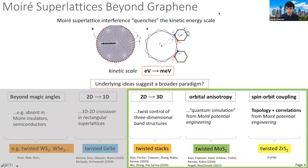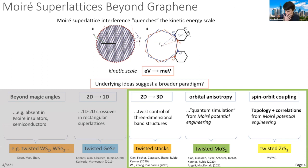I'll give three examples: the 2D-to-3D crossover from controlled stacking of heterostructures; orbital anisotropy in a simple example of twisted MoS2; and the role of spin-orbit coupling in work currently in preparation for twisted Group 4 transition metal dichalcogenides.